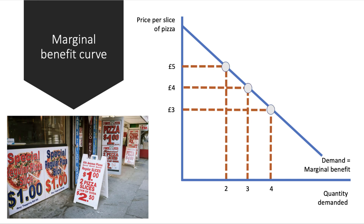For example, as the utility from consuming extra units of pizza goes down, consumers are willing to pay only a lower price — hence the downward sloping demand curve. For one product like pizza, the optimum level of consumption is to consume a quantity where marginal utility equals the price. It wouldn't make sense if you're getting four pounds worth of satisfaction to pay eight pounds.